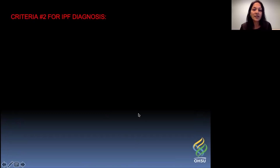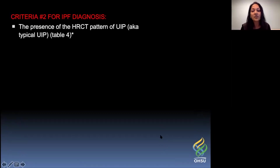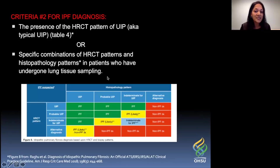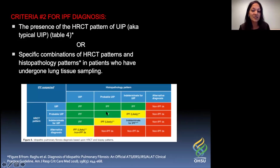This leads us into criteria number two. Criteria number one was exclusion of a known underlying cause — the findings must be idiopathic. Criteria number two is the presence of an HRCT pattern of UIP, a.k.a. typical UIP. If your HRCT shows typical UIP and the clinician has ruled out an underlying cause, then you meet the criteria for IPF. Criteria number two has two parts — if the patient has undergone a biopsy, you can use both the HRCT pattern and the histopathological pattern to categorize them as IPF, likely IPF, or non-IPF.